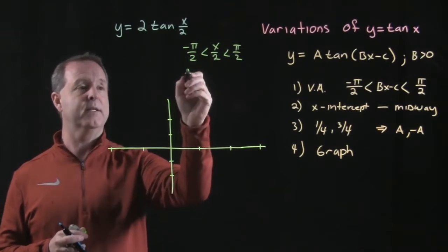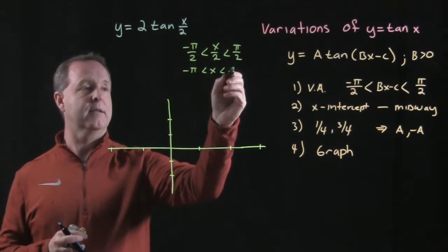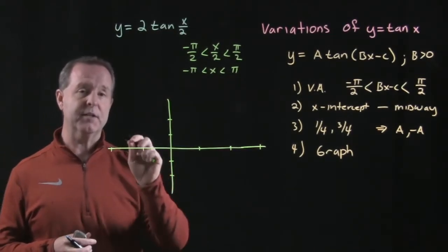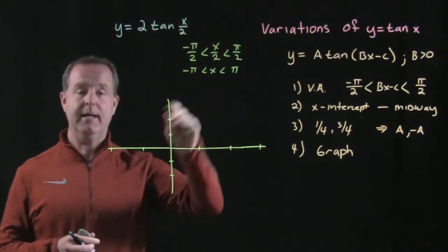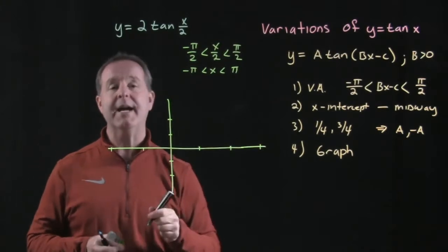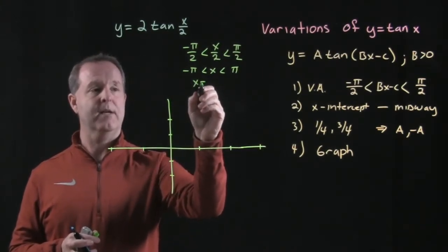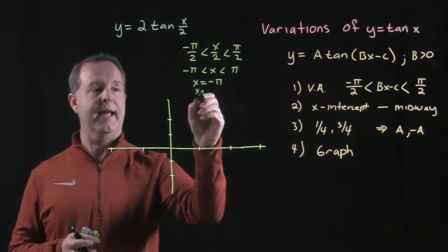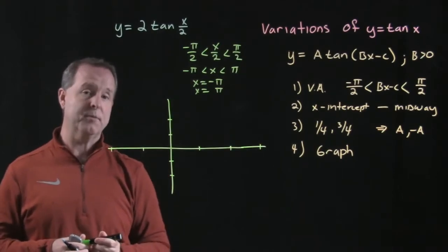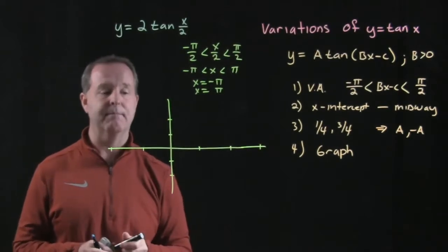Let's reduce that down by dividing everything by two. So I have negative pi is less than x, which is less than pi. So I have a period of this graph going from negative pi to positive pi. The vertical asymptotes will occur where x equals negative pi and x equals positive pi — those are my end caps.